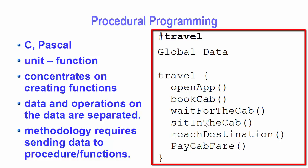In procedural programming languages, we concentrate on creating functions. The major drawback is that data and operations on the data are separated. We need a methodology to send the globally saved data into these functions, which take data either as arguments or as global variables and then perform some actions to give you a result.